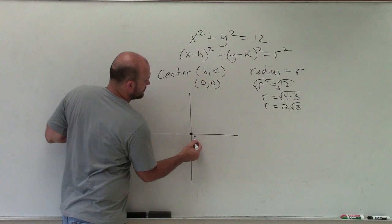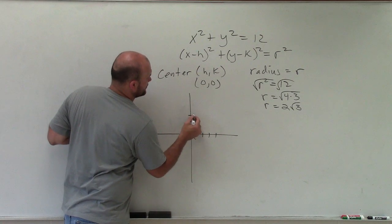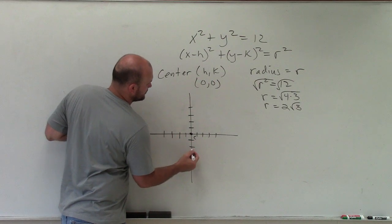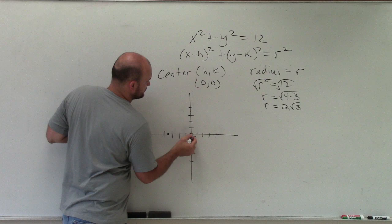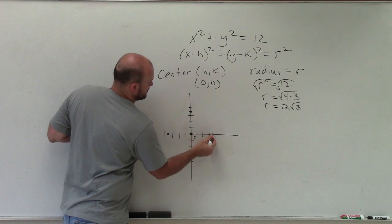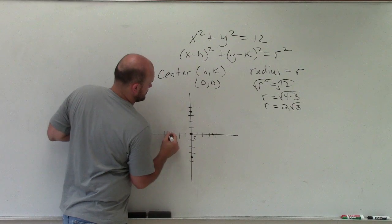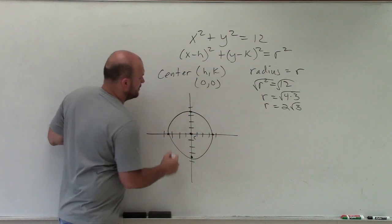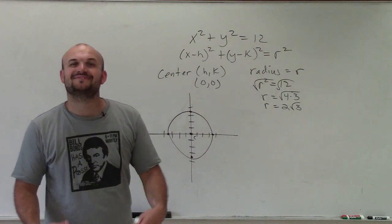So from my center, I'll count out approximately 3 to 4 units in each direction — up, down, left, and right — to plot the circle on the graph. And there is your lovely circle. Thanks.